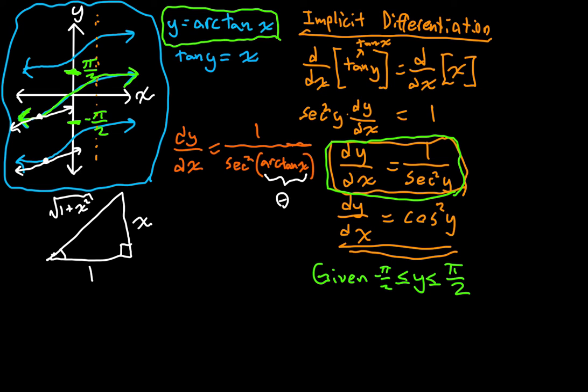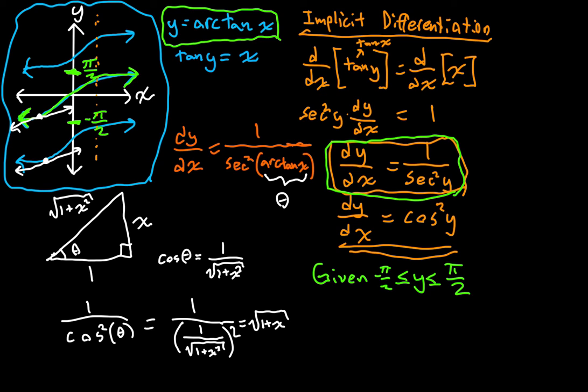So now we need the secant squared. So we need 1 over the cosine squared of that angle theta. Well, what's the cosine? The cosine of theta is equal to 1 over the square root of 1 plus x squared. So 1 over the cosine squared of theta is going to be 1 over 1 over the square root of 1 plus x squared.